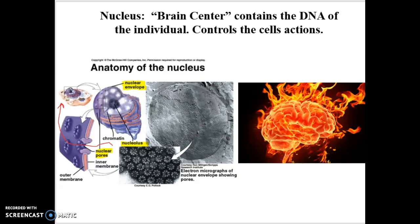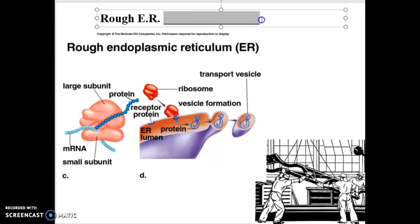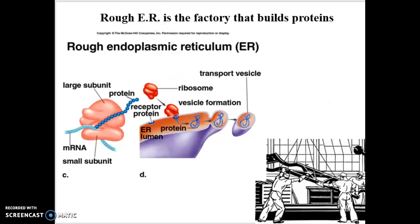Attached right next to the brain center is a big squiggly membrane known as the endoplasmic reticulum. We call it the rough ER because it has little structures attached to it called ribosomes. Collectively, the rough ER is the factory that builds proteins. Proteins are made up of amino acids, and something has to put those amino acids together — that is the job of the rough ER. The ribosome reads the genetic information from the nucleus, takes that code, and assembles a protein — whether it's a first, second, third, or fourth level protein.